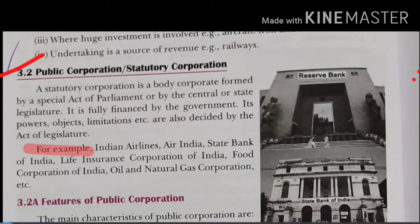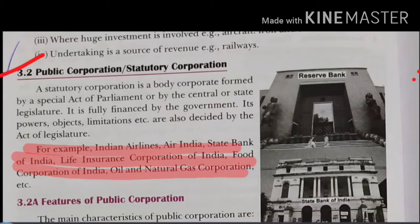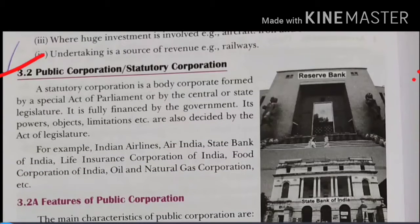For example, Indian Airlines, Air India, SBI, LIC, FCI, and ONGC are good examples of public sector public corporations. You can write SBI, ONGC, FCI, Air India — these are the good examples of public corporations.